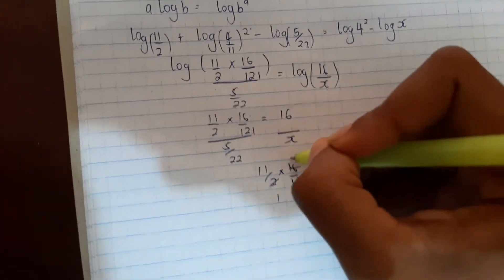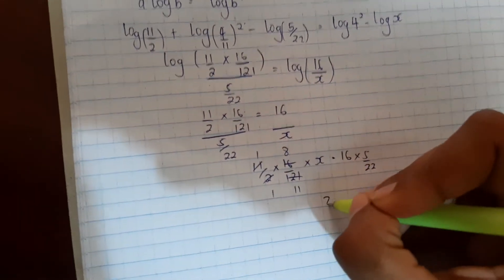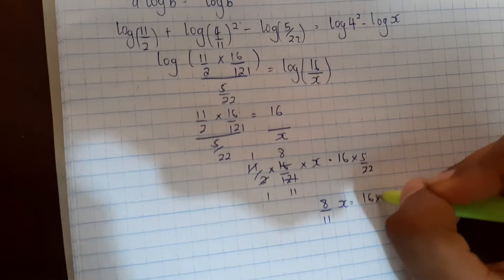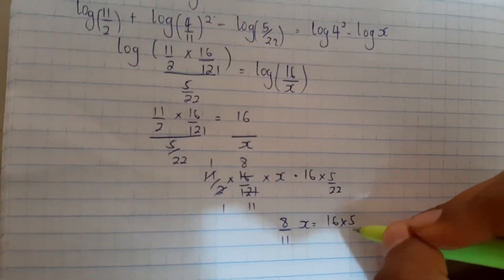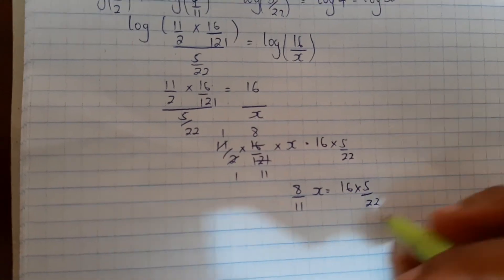So this becomes 1, this becomes 8, 1, this becomes 11. So 8/11 times x equals 16 times 5 over 22. We divide both sides by 8/11.